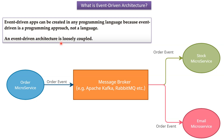Event-driven architecture is loosely coupled. The order microservice doesn't have to know about the stock microservice and email microservice. The work of the order microservice is, whenever an order is created, to create an order event and publish it to the message broker — that's it. The stock microservice and email microservice don't have to know about the order microservice which is publishing the order event. Their work is simply to consume order events from the message broker and perform their functionalities.